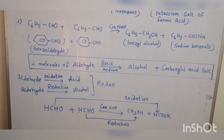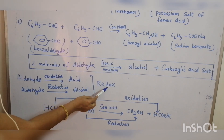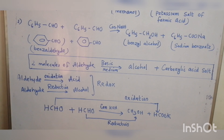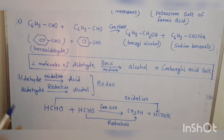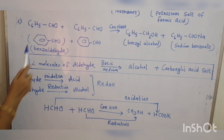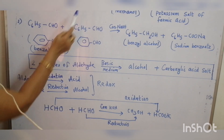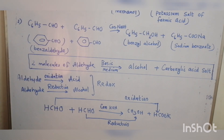As both oxidation and reduction take place, the Cannizzaro reaction is a redox reaction. Two molecules of the same aldehyde give different products — methanol and the potassium salt of formic acid — so this is a disproportionation reaction, occurring in a highly basic medium.